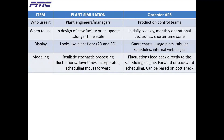PlantSim models realistic stochastic processing fluctuations and downtimes that simulate randomness occurring on the plant floor. In OpCenter APS, fluctuations feed back directly to the scheduling engine. Scheduling can be moved forward or backward and can be based on the bottleneck.